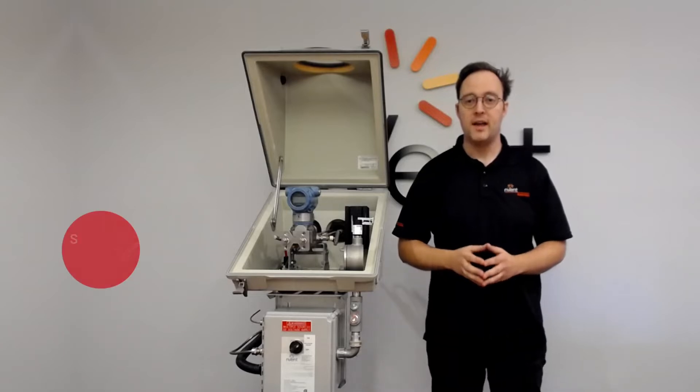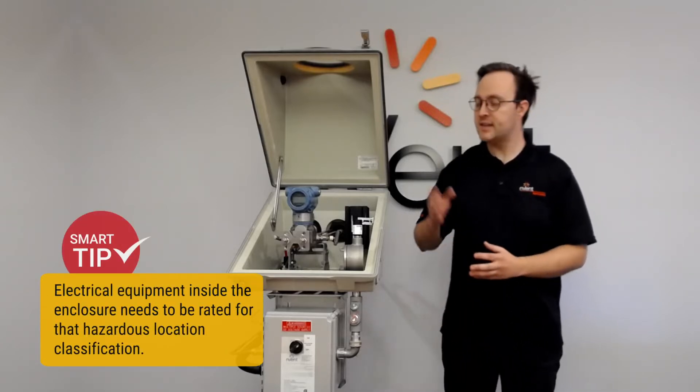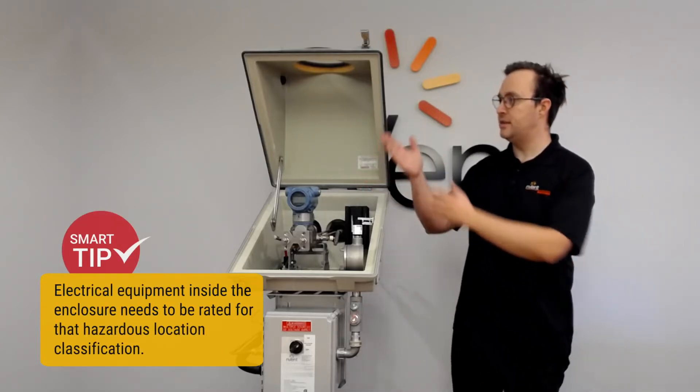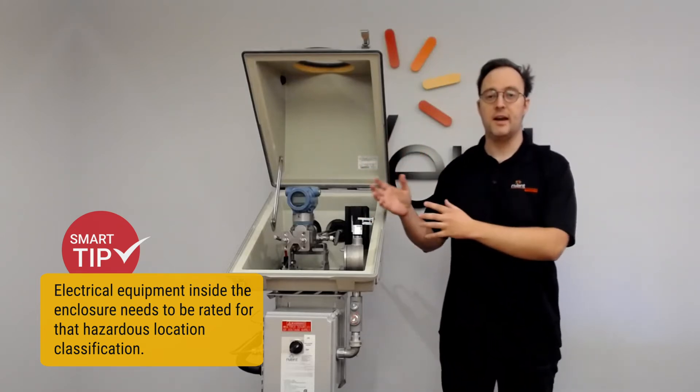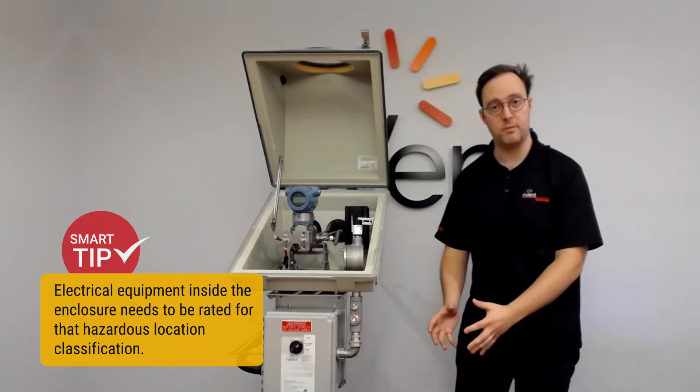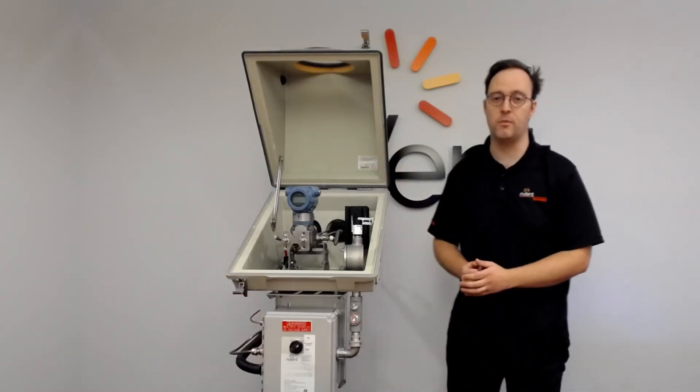The next thing to think about is the area classification. Inside of an enclosure, typically because it is a sealed unit, the inside has its hazardous location, whereas outside could be general purpose. There's a difference and that's important to remember.